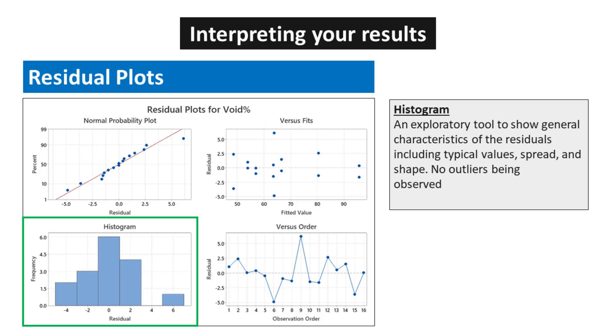Histograms are a useful exploratory tool for analyzing the characteristics of residuals in a statistical model. They provide a visual representation of the typical values, spread, and shape of the residuals, allowing analysts to identify any patterns or trends. In this case, the histogram of the residuals shows no outliers, indicating that there are no unusually large or small residual values that could significantly impact the model.